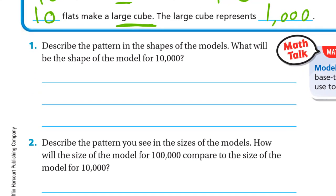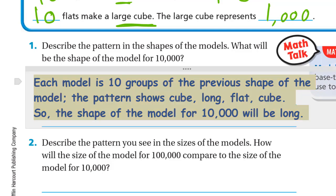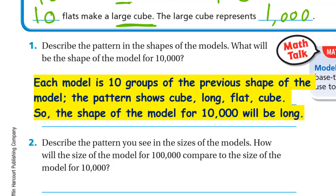Describe the pattern in the shapes of the models. What will be the shape of the model for 10,000? Each model is 10 groups of the previous shape. The pattern shows: cube, long, flat, cube. So what comes next? The shape of the model for 10,000 will be long.